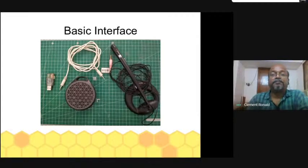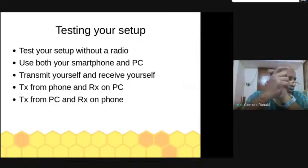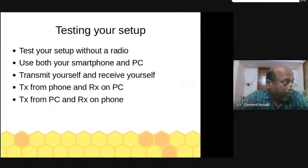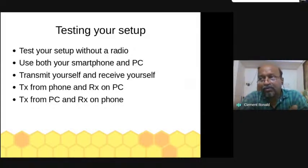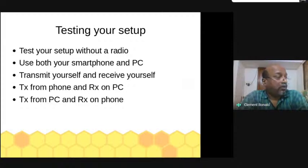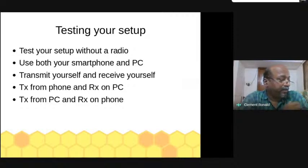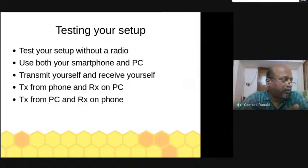Once you have set up, you need to test your setup for good quality signals — and you can do this even without a radio. Since SSTV is only sound, you can use two devices in the same room: one smartphone and one PC. You can transmit from the phone and receive on the PC, or transmit from the PC and receive on the phone. Just across the room you can test your external sound card, microphone, and speakers.